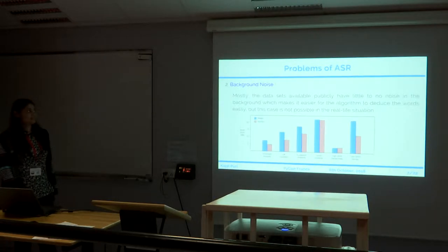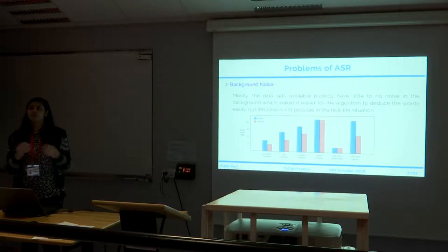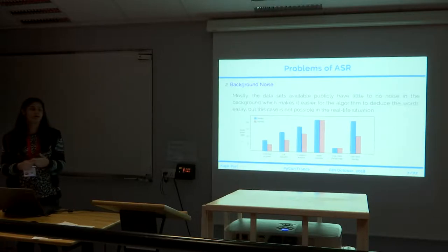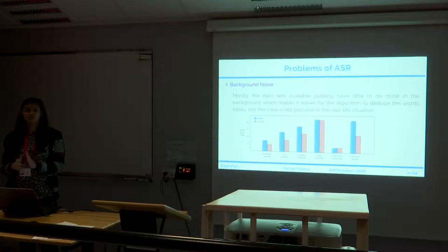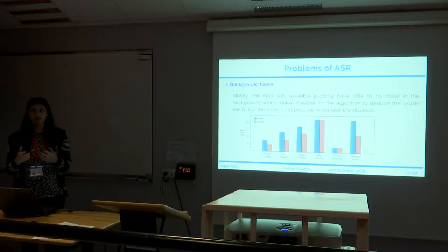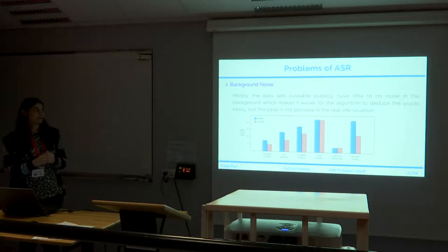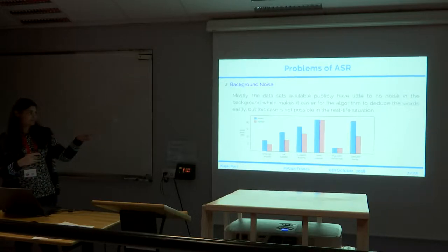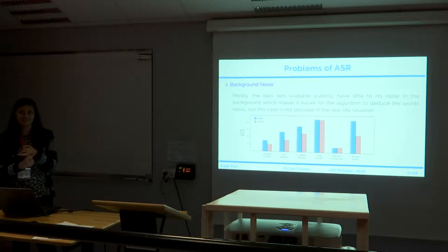The second problem of ASR is background noise. In an ideal situation you will be sitting in a quiet room talking to Siri, but you can also be traveling or in a park where background noise plays a significant role. Most datasets available on the internet are very ideal and do not have any background noise. But in real time, whenever you are speaking you will often have background noise that interferes and the system is not able to predict correctly. This graph shows the intersection of accent and background noise — the highest word error rate is when there is an Indian native speaker with background noise.